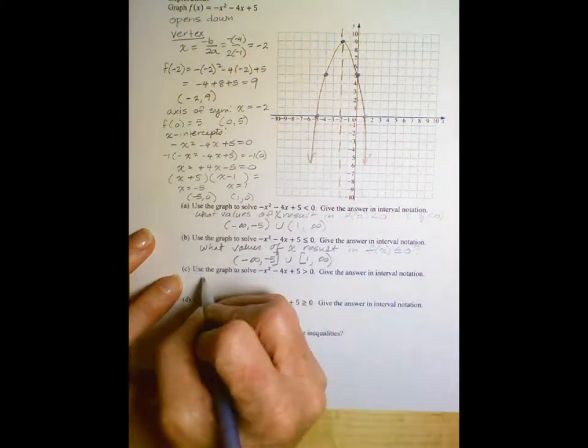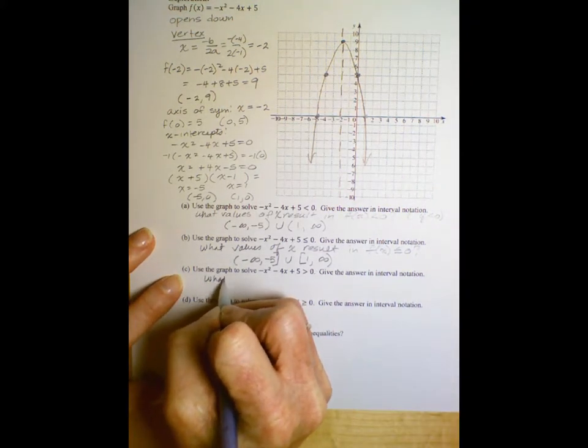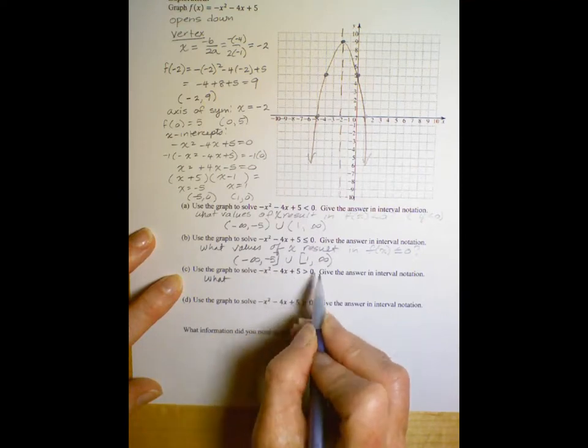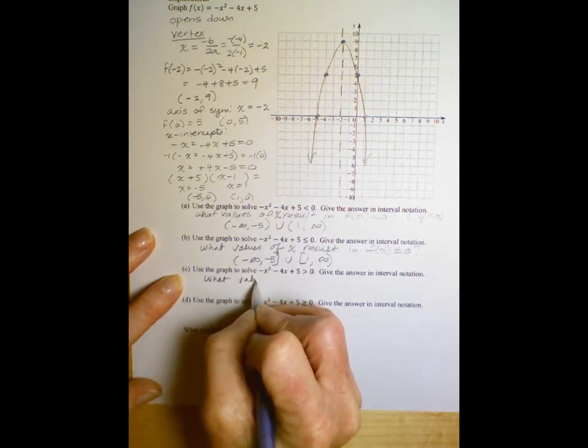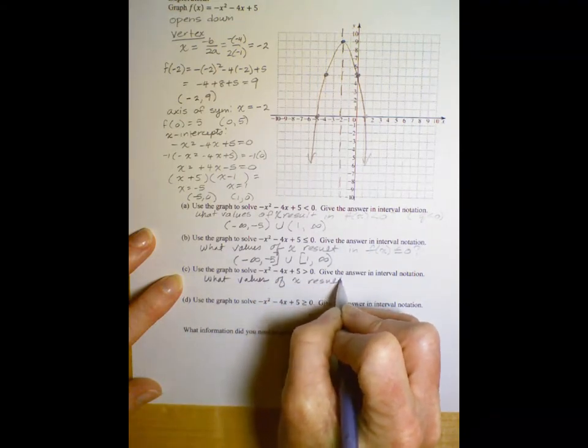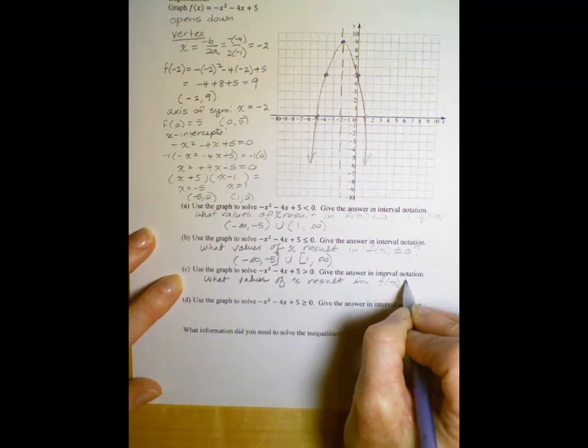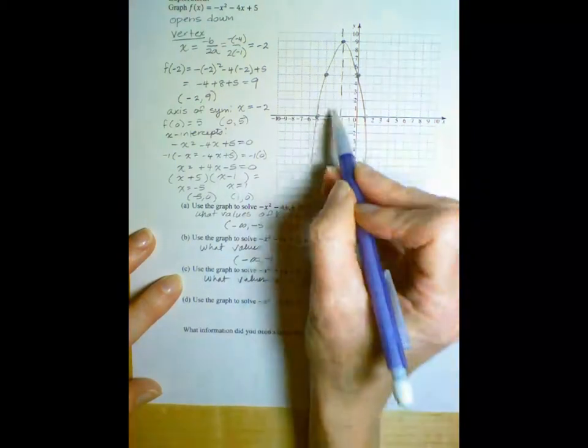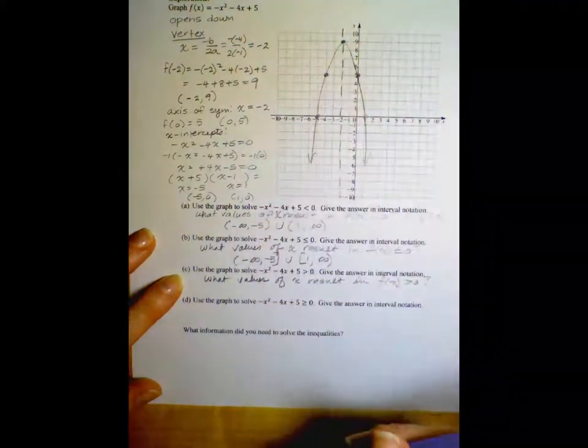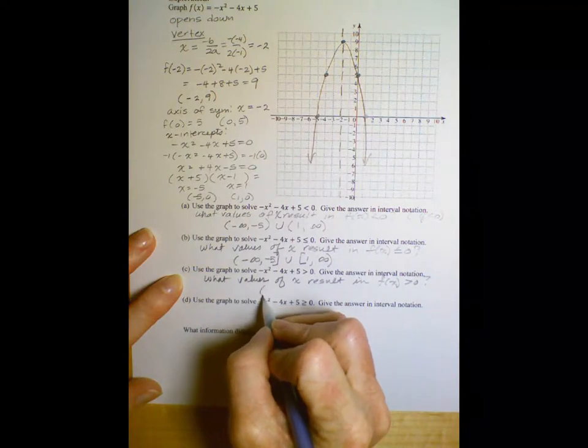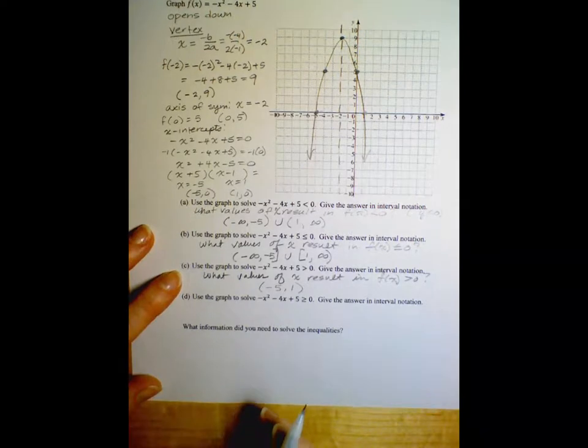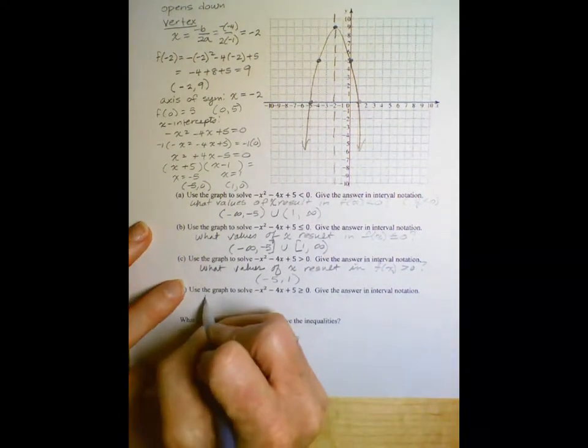I'm not going to write this in. Well, let's write it one more time. We might as well. Now we want to know what values of x result in y values that are greater than 0. I think it's helpful to put it into words. Result in an f of x that's greater than 0. Well, we can see that between here and here, all these x values are greater than 0, but not at negative 5. So from negative 5 to 1, but not including negative 5 and 1 because it has to be greater than 0.